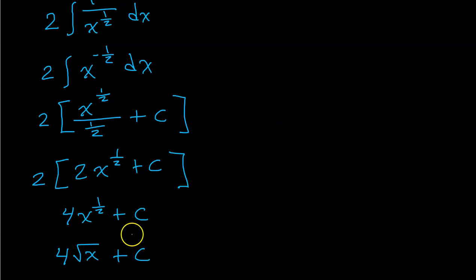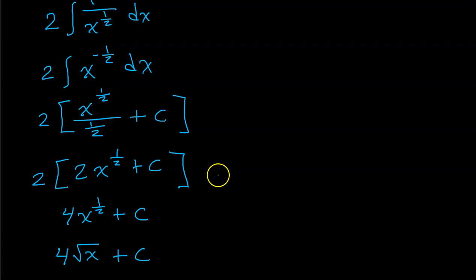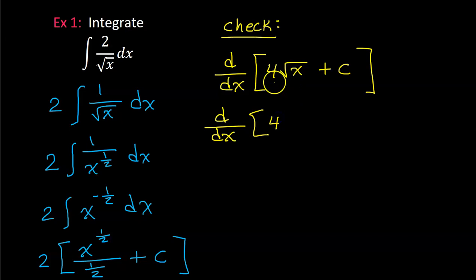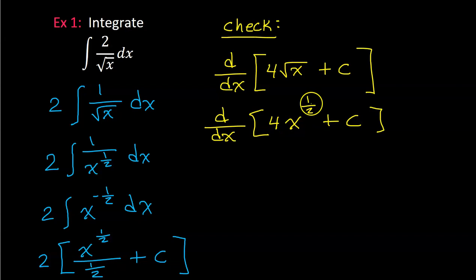I'm not going to check all answers in this lesson, but let's check this first answer to remind ourselves what integration really means. When you integrate, you are finding the anti-derivative — something that will give you the original function back if you take the derivative. So if we take the derivative of 4 radical x plus c, we should get 2 over the square root of x. Let's rewrite this with an exponent: 4 times the square root of x is 4x to the 1/2 power. When we take the derivative, we use the power rule — the 1/2 comes to the front and multiplies.